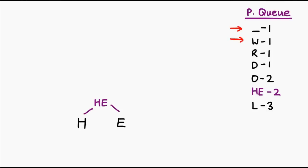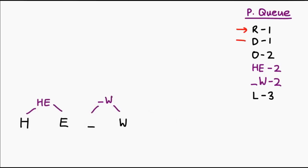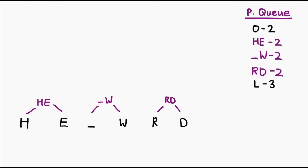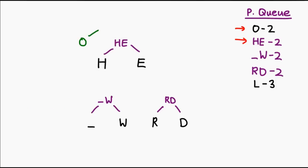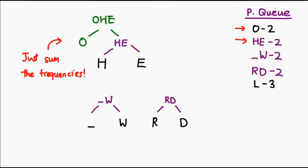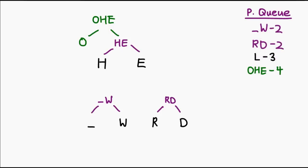Rinse and repeat until the priority queue is empty. Our next two symbols are space and W, so we construct a small tree creating the space-W symbol of frequency 2, which we insert back. Same deal for R and D — combine and reinsert. Now the next two are more interesting: we combine O with the HE symbol we constructed earlier, creating the OHE symbol with frequency 4 — the sum of O and HE, both frequency 2. We insert that at the bottom of the priority queue.